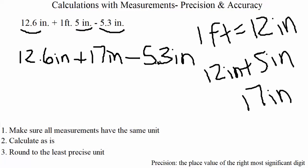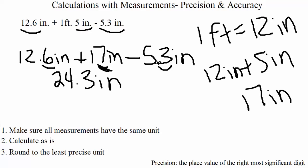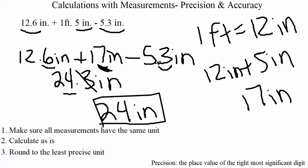Doing that calculation gives us 24.3 inches. Now we round to the least precise unit. The first measurement is precise to the tenths, the second (17 inches) is precise to the ones, and the third is precise to the tenths. The least precise is the ones place, so we round 24.3 to the ones place. The digit to the right of the ones place is 3, which tells us to round down. The final answer is 24 inches.